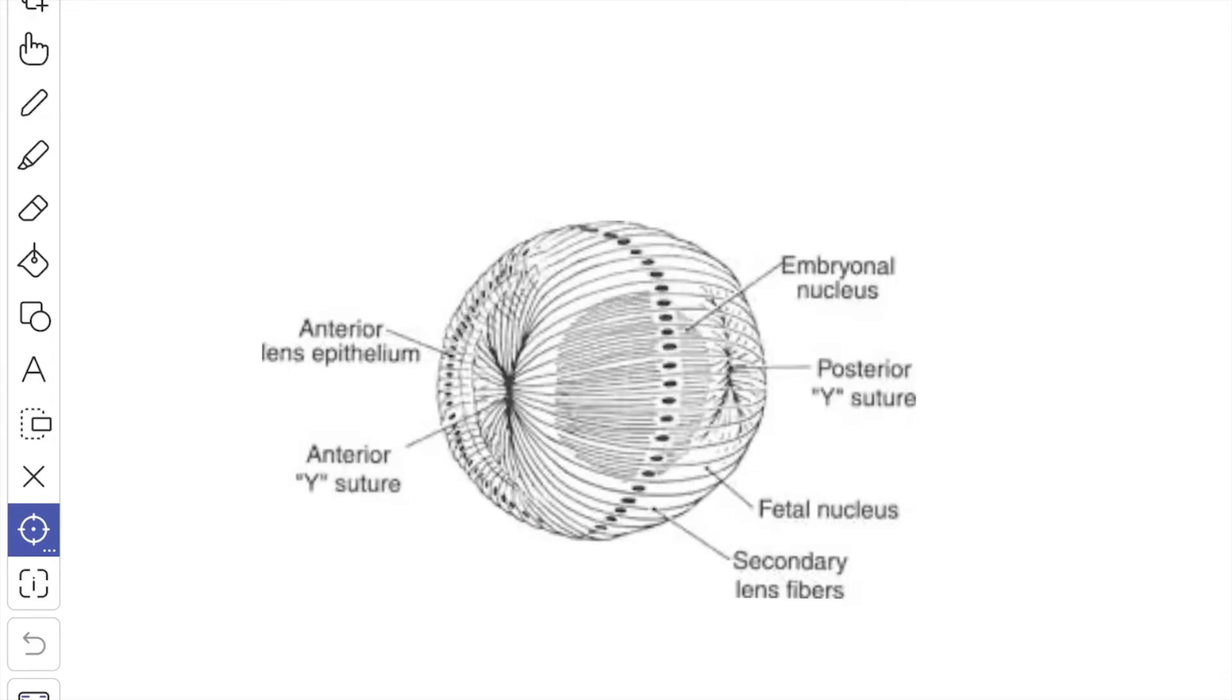In this picture, you can see the anterior epithelium which covers the anterior surface. This is a low cuboidal epithelium. When it reaches the equator, it forms elongated cells and they differentiate into lens fibers, forming the bulk of the lens substance.